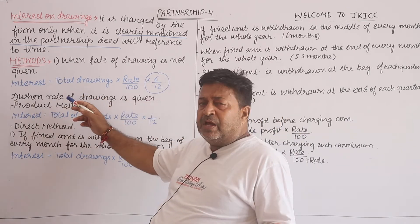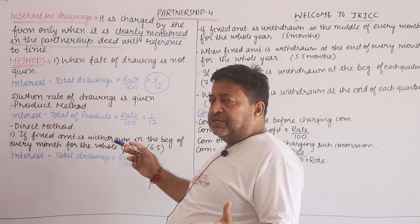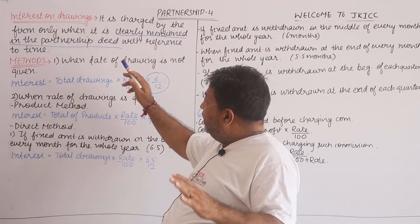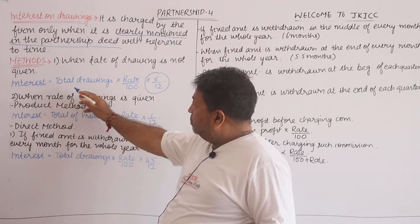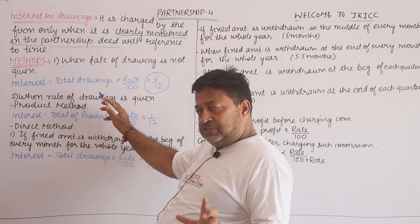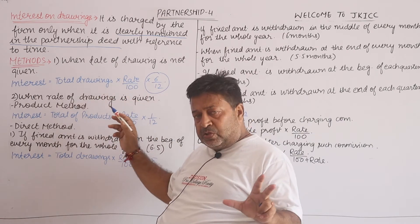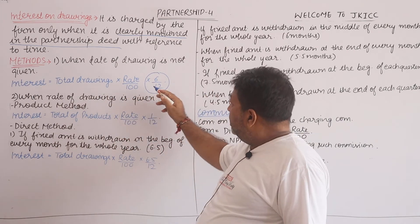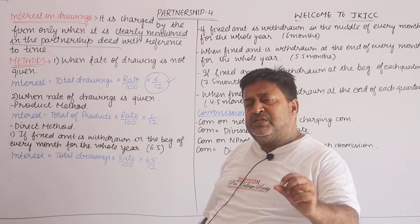Otherwise it is normal — similar to the interest a bank charges. When the date is not given, we have the total drawings and the rate given for the year. We assume 6 months, so we use 6/12.